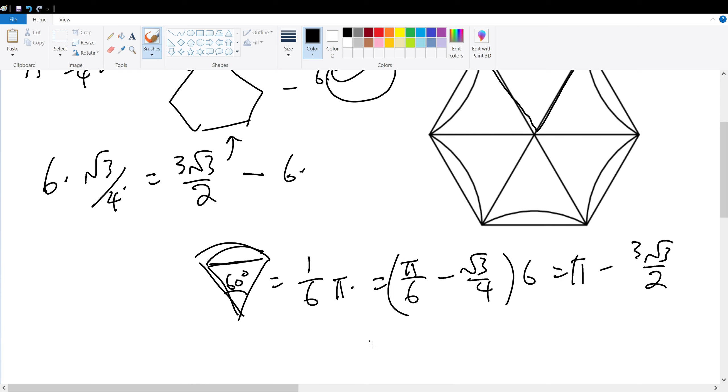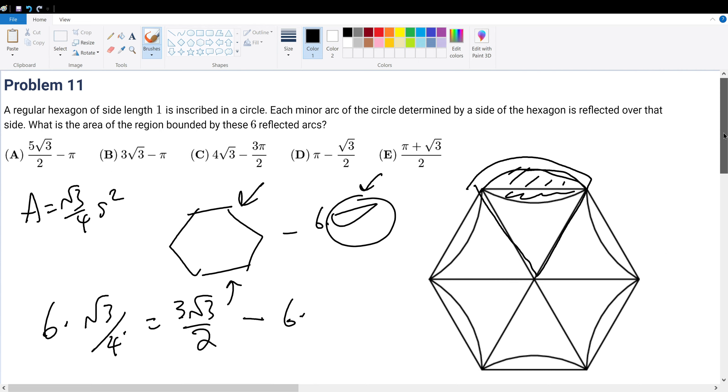Now just do three root three over two minus pi plus three root three over two, which gives three root three minus pi. That should be our answer, and if you scroll up, indeed answer choice B is our correct answer.